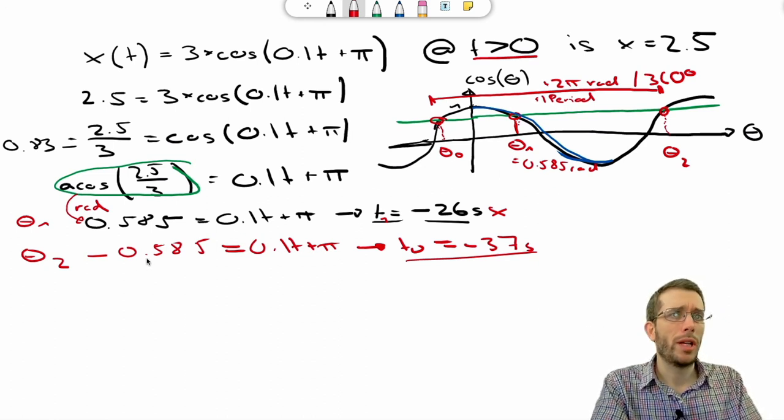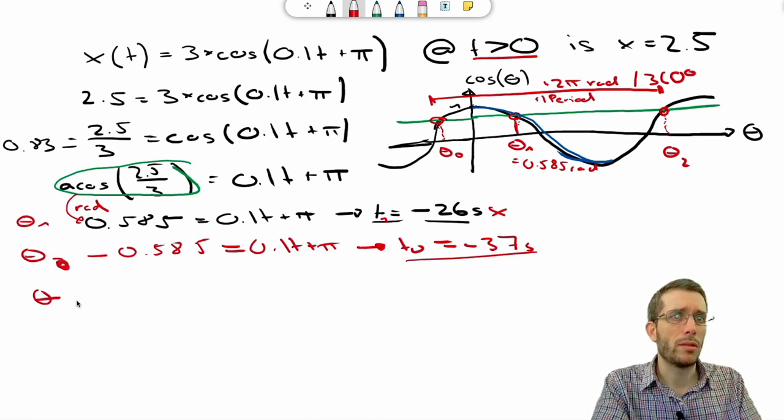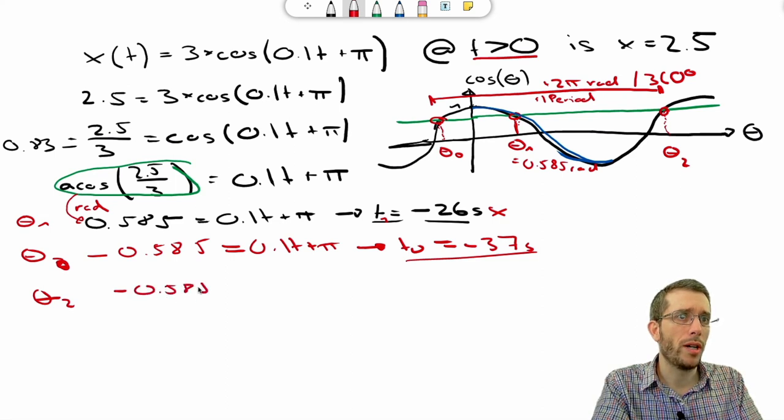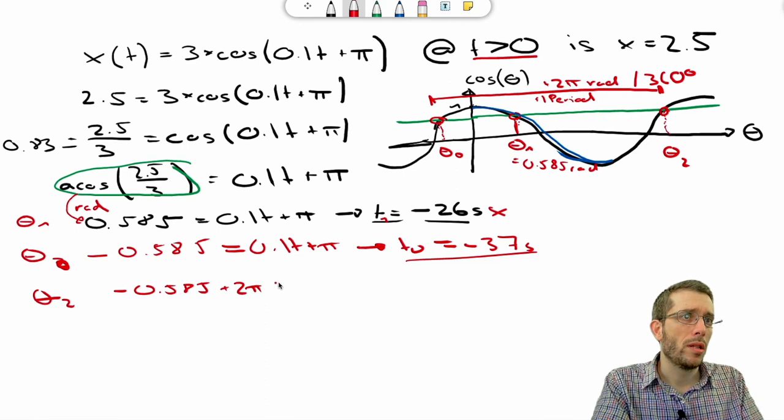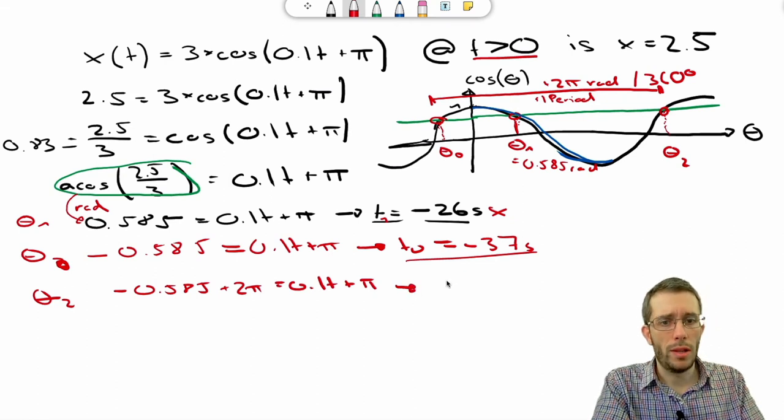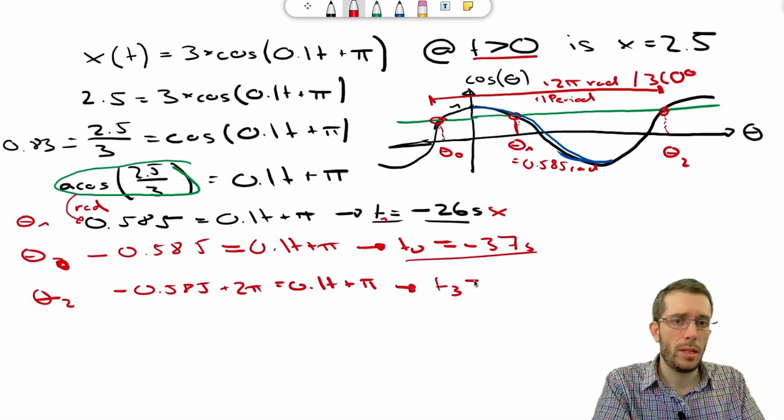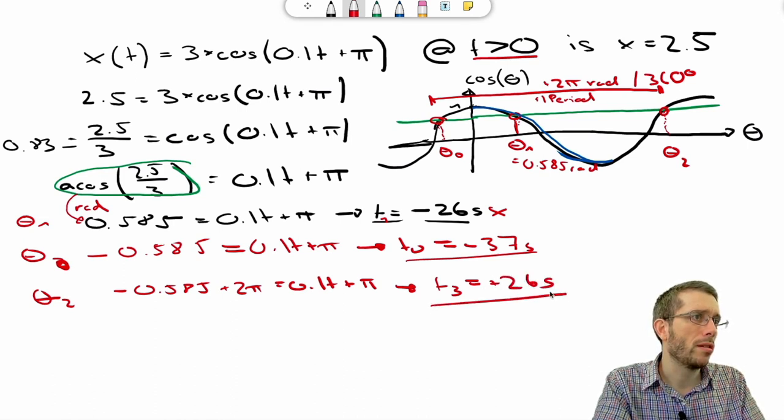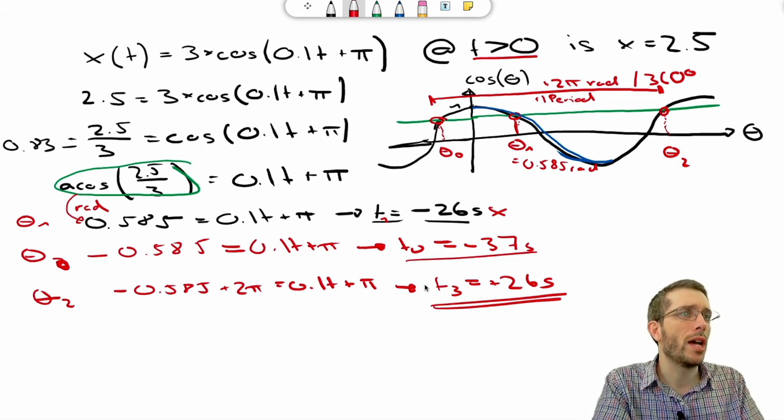So the period here has an angle either in 2 pi radians or 360 degrees. So what I could do is, okay my θ, so this was θ0, so my θ2 would be my minus 0.585 plus 2 pi equals 0.1t plus pi, and then I solve this, and I will get my third time is plus 26 seconds, which will be my first positive answer, so the answer to this problem.